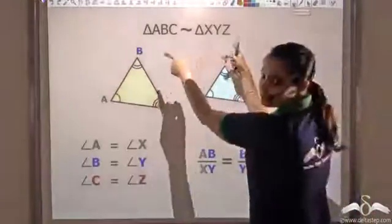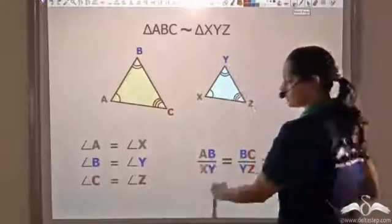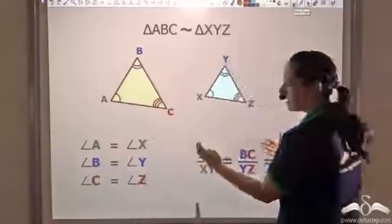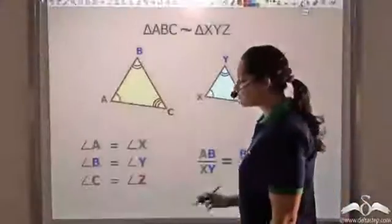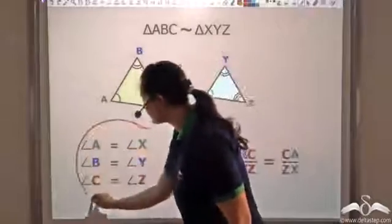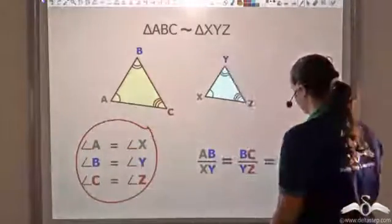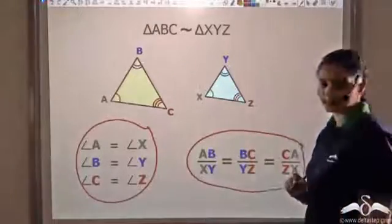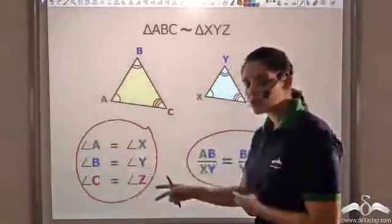Now we have seen that if two triangles are similar, then the corresponding angles would be equal and the corresponding sides are proportional. We have also seen that corresponding angles being equal alone is sufficient to prove similarity, and corresponding sides being proportional alone is also sufficient to prove similarity. Now, can a combination of these two work?